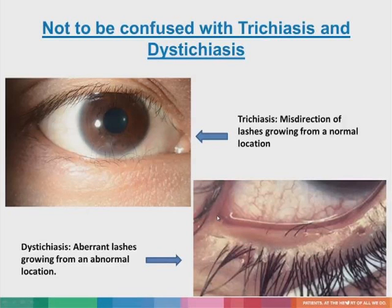As for distichiasis, this refers to aberrant lashes that are growing from an abnormal location, as seen in this photograph, where they are actually growing from the meibomian gland orifices.